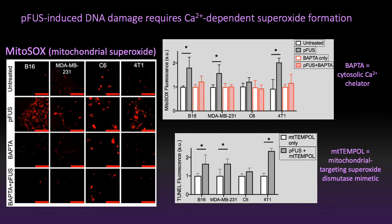Next we looked at superoxide formation after treatment to determine if this played a role. High levels of calcium can enter the mitochondria and cause possible issues with mitochondrial metabolism, and we were trying to figure out if this was happening. Using the MitoSOX assay, we determined that pulsed focused ultrasound did indeed cause an increase in superoxide formation. However, when BAPTA was added, this increase was not seen in any of the cell lines. Going further, we tried to inhibit superoxide formation by adding mitoTEMPO, a superoxide dismutase, but we did not see any difference from our treated controls.